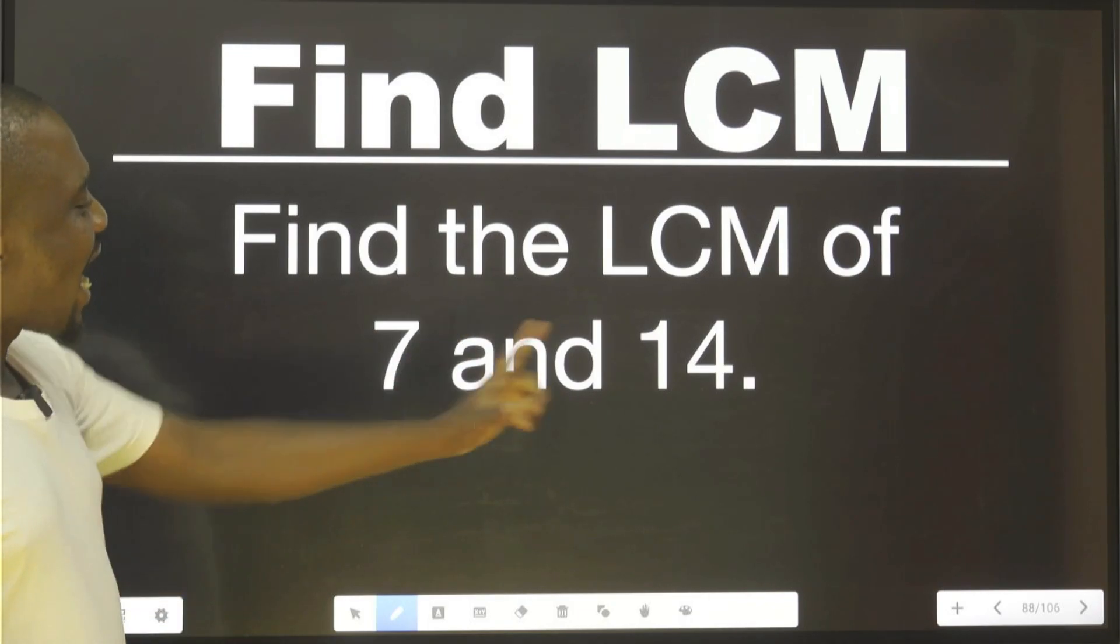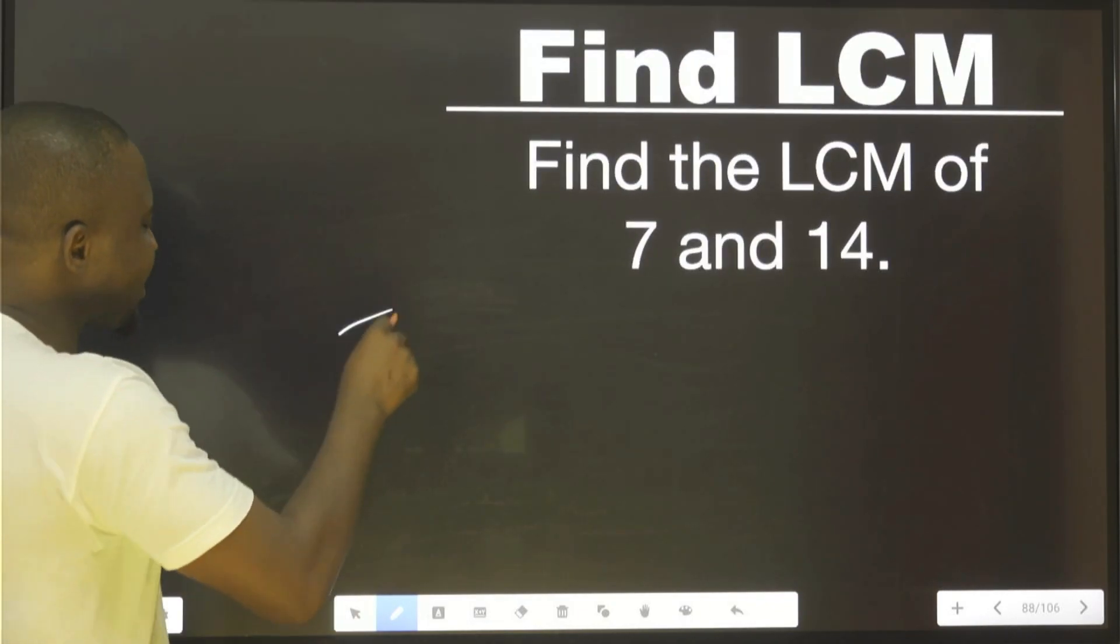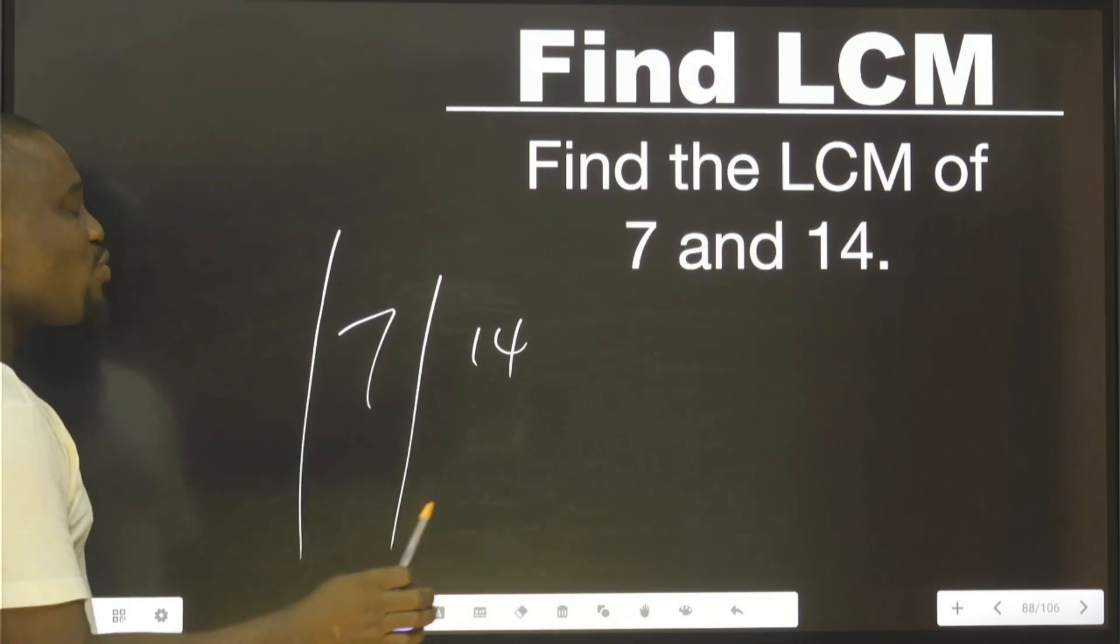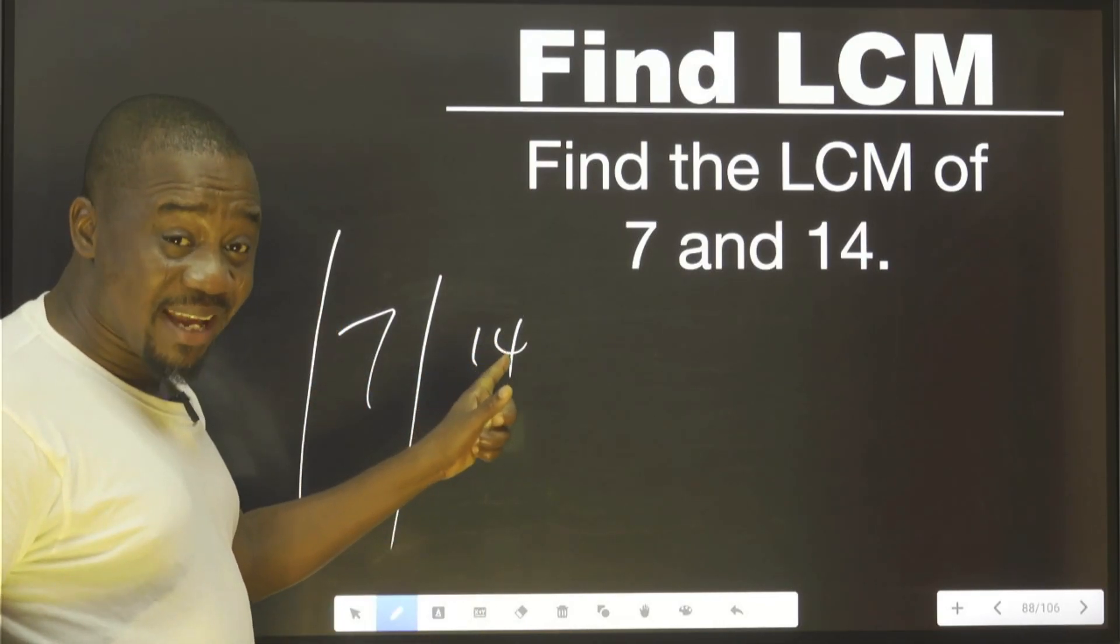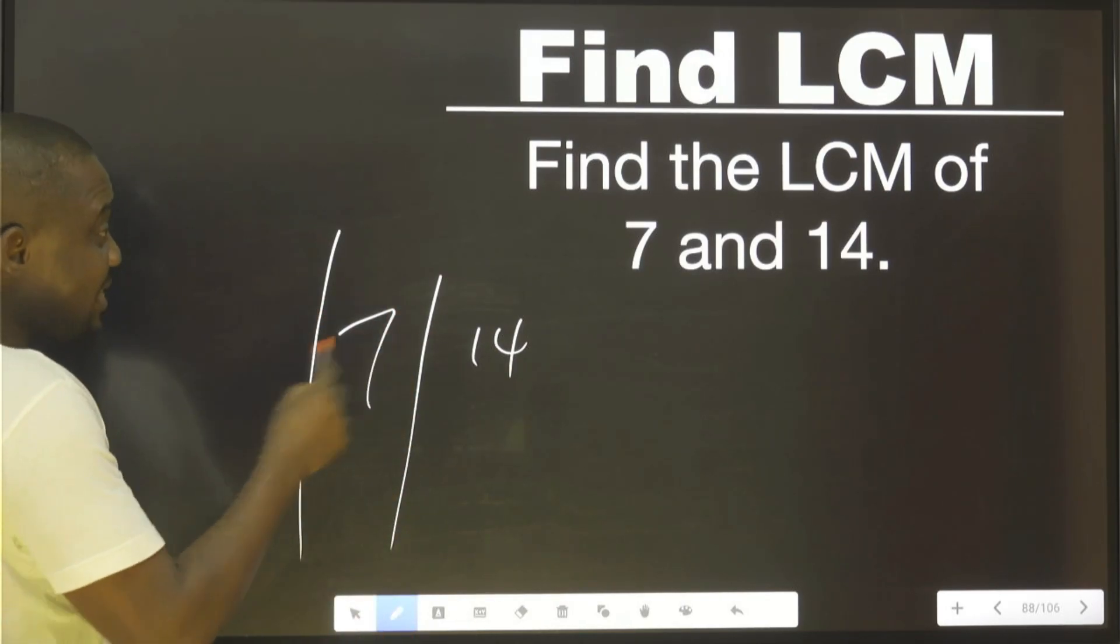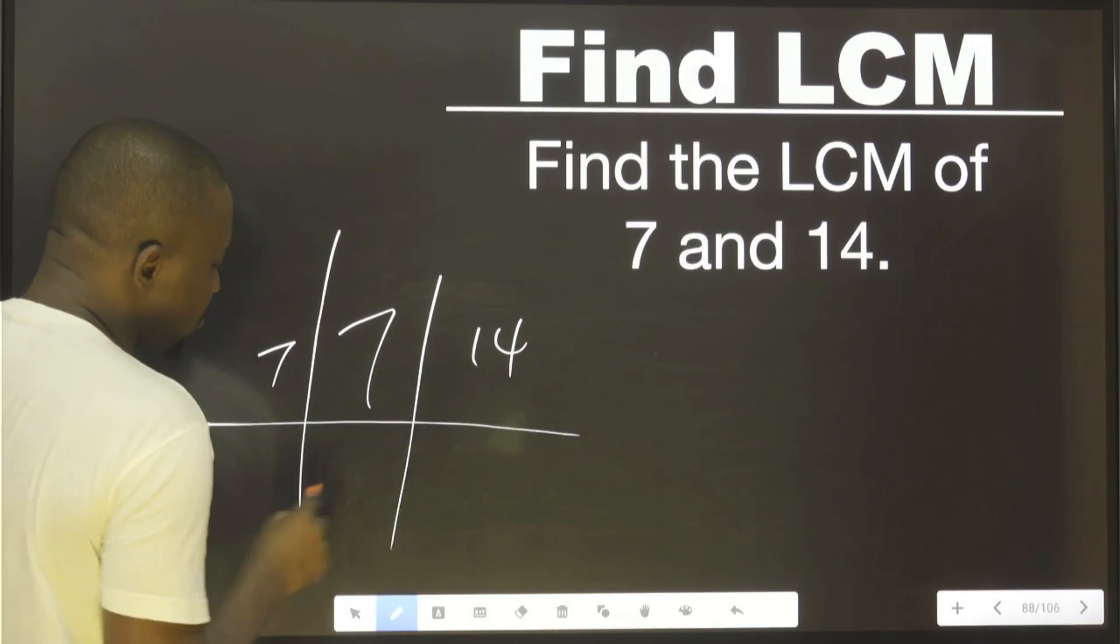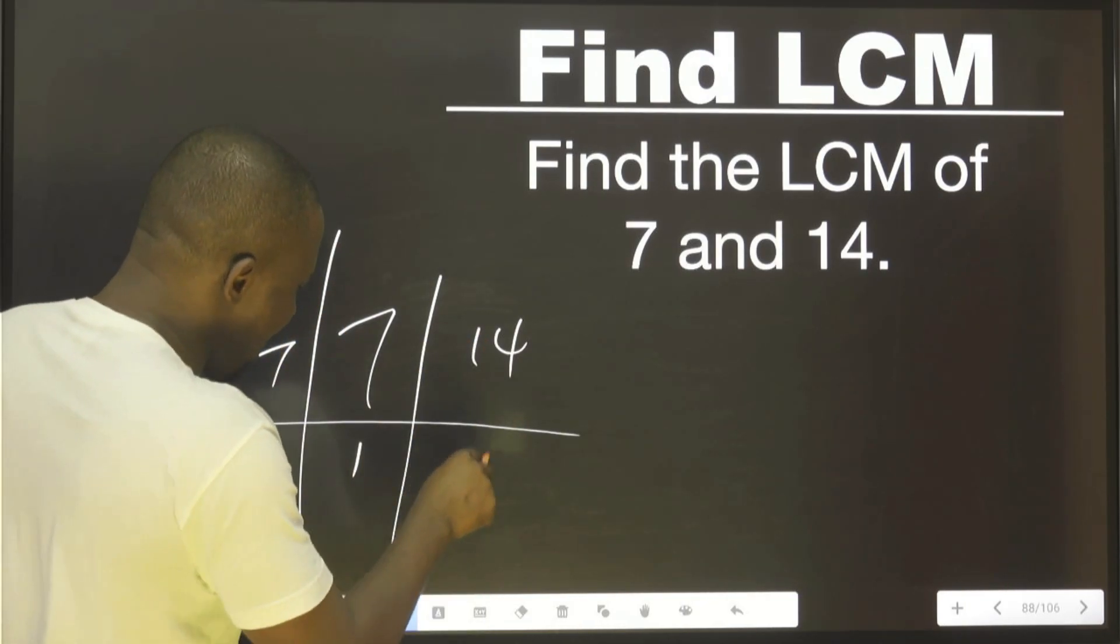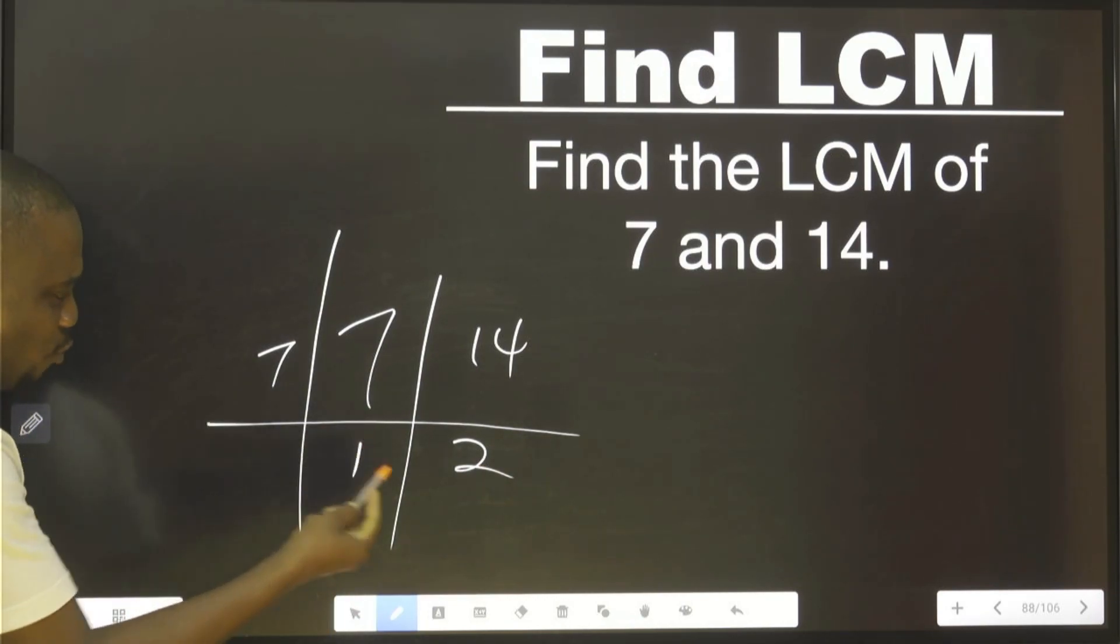Look at this. We are asked to find the LCM of these two. Don't worry yourself. 7 and 14. What can I use to divide this without any remainder? Don't think about this guy. Just only this. Because this is LCM, not GCF. LCM. So, seven can go. One. Can seven also go here? Yes. I will have two. Then we have one here.